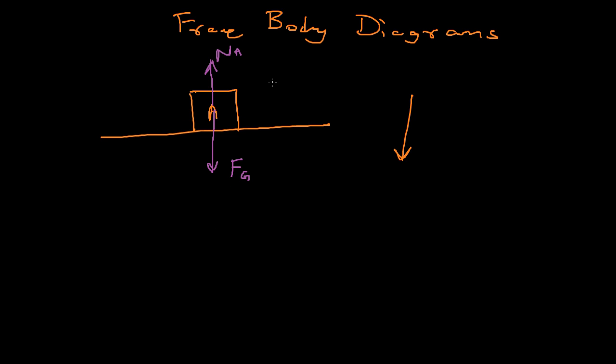The block is not moving in any direction, so there are just two forces acting on it. Those two forces are equal and opposite — they cancel each other out. That's the basic free body diagram. Now let's draw another example: an inclined plane with a block on it, and the block is not moving.